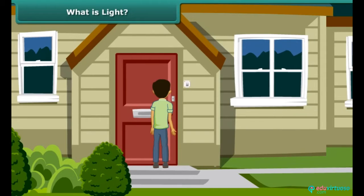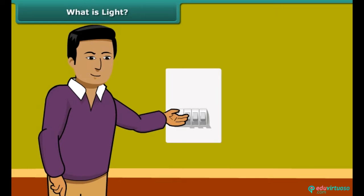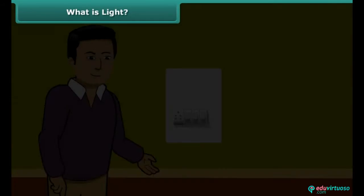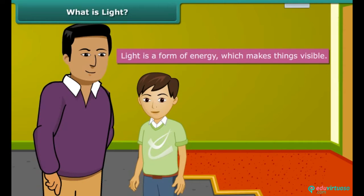It is night and you step inside the house. There is darkness all around. Everything appears black. You can hardly see anything. Your father switches the light on and now you can see everything clearly. This means light enables viewing. Therefore, light is defined as a form of energy which makes things visible.